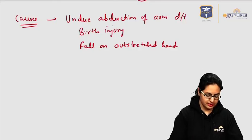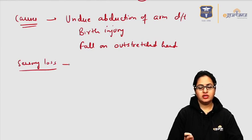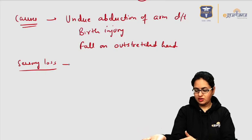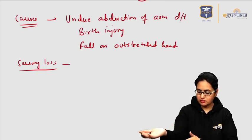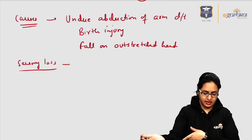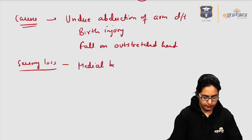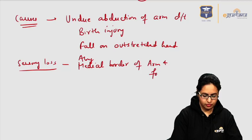When this kind of injury is there, the sensory loss will be in the area of C8 and T1, which is along the medial border of the arm and the medial border of the forearm. So the sensory loss is along the medial border of the arm and forearm.